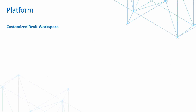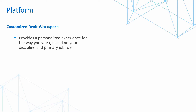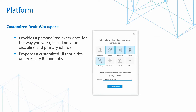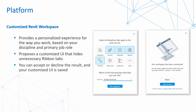We now have the ability to customize Revit workspaces, providing a personalized experience for the way you work based on your discipline and primary job role. You can have a customized UI interface that hides unnecessary ribbons. For those in the MEP field, you can choose mechanical, electrical, and piping, and switch off structure, interface, and construction so you don't have to worry about those tools in your interface. You can then accept or decline the results, and your customized UI is saved — or you can restore it back to its original default settings.